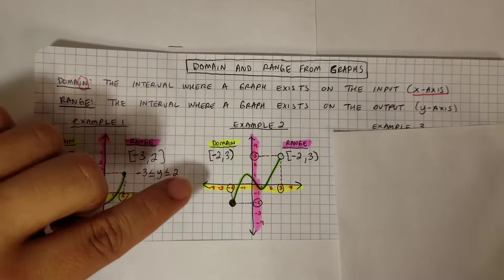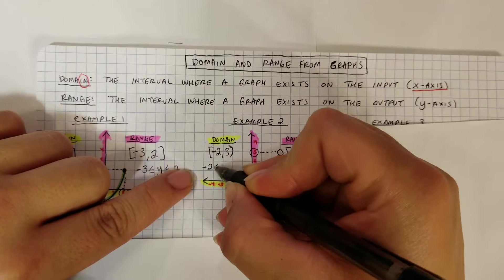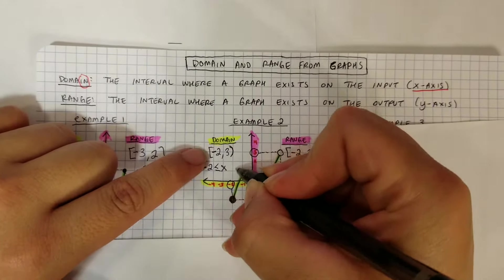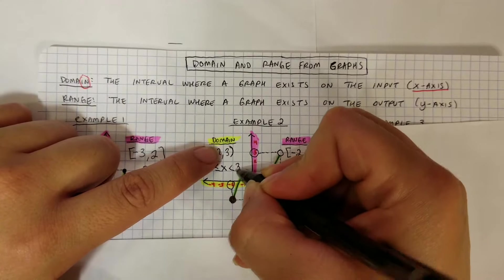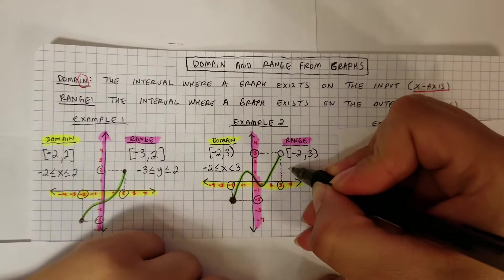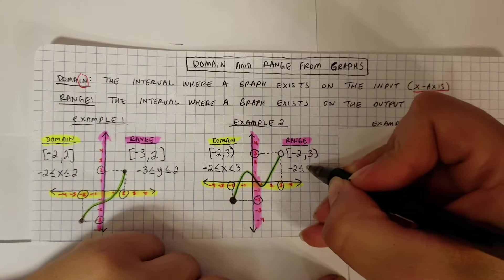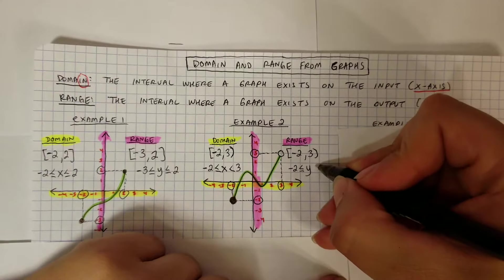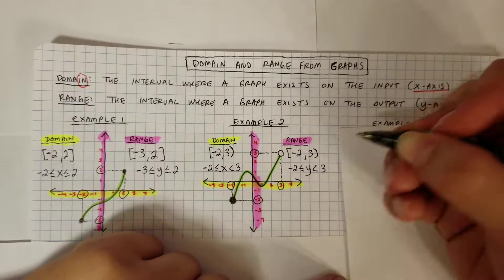As an inequality: the domain is -2 ≤ x < 3 — a line under the first inequality because of the bracket, no line under the second because of the parenthesis. For the range, same thing: -2 ≤ y < 3, using y since it's the y-axis for the range.